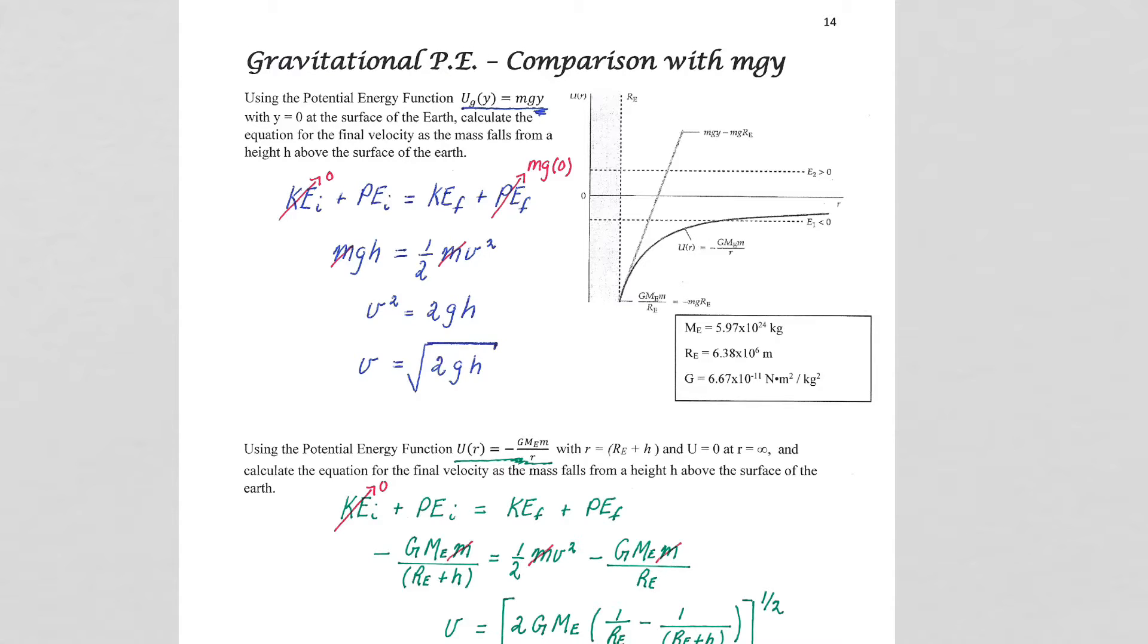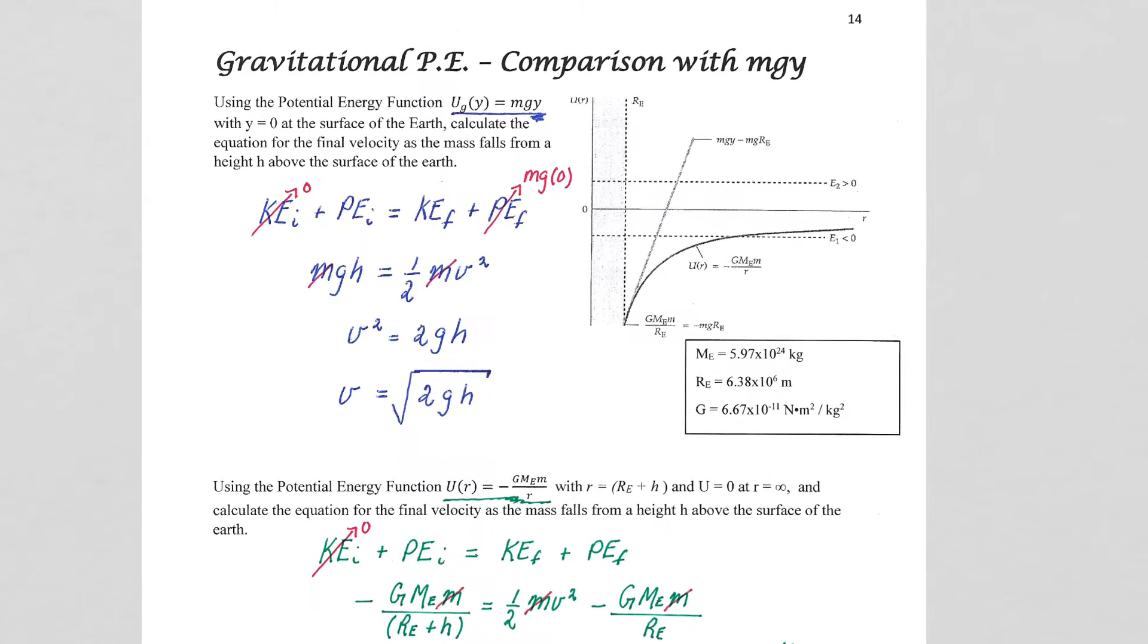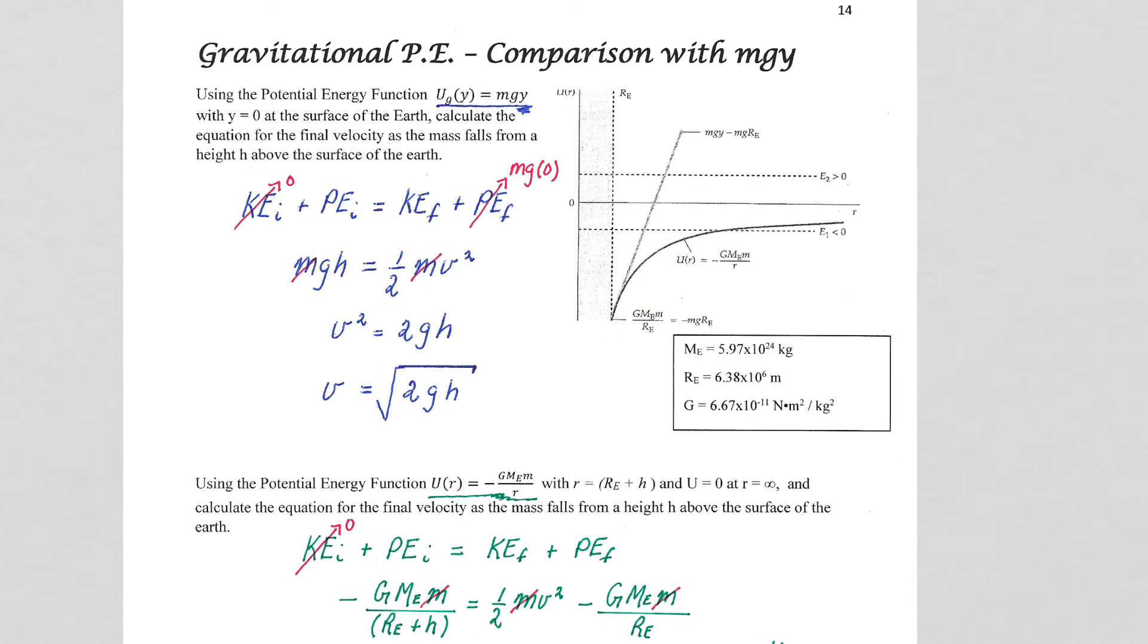Here we're going to continue to look at gravitational potential energy and we're going to look at an interesting comparison between how our two equations for potential energy end up calculating the conversion of that potential energy into kinetic energy and when do they begin to differ.